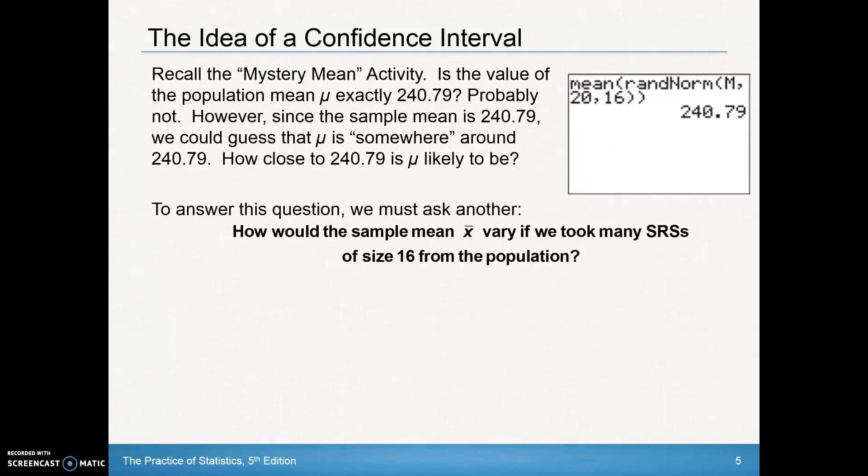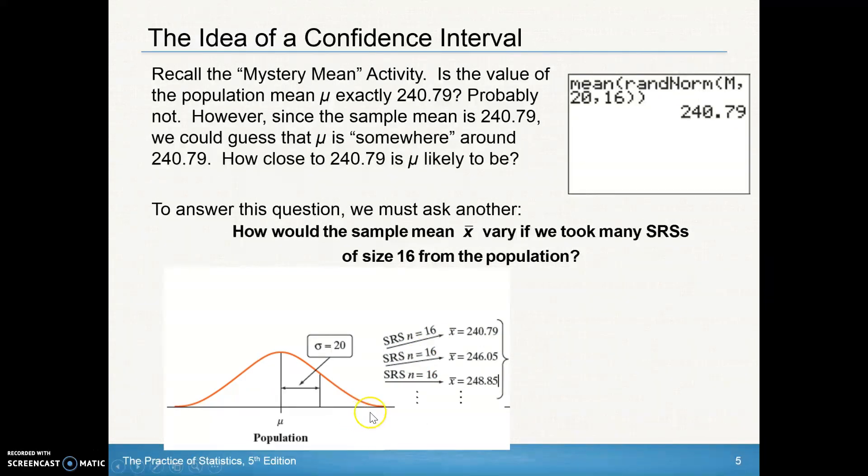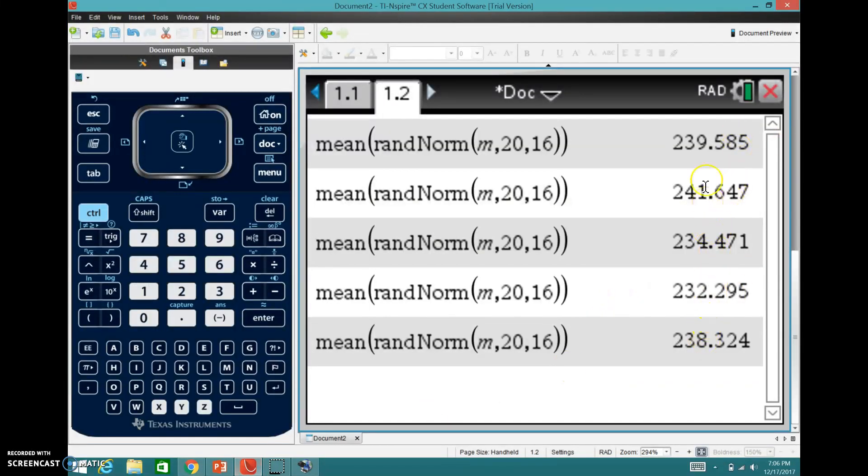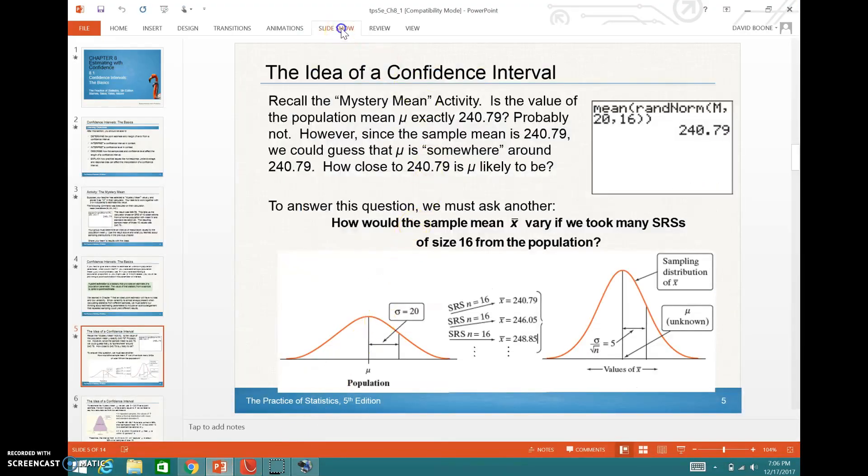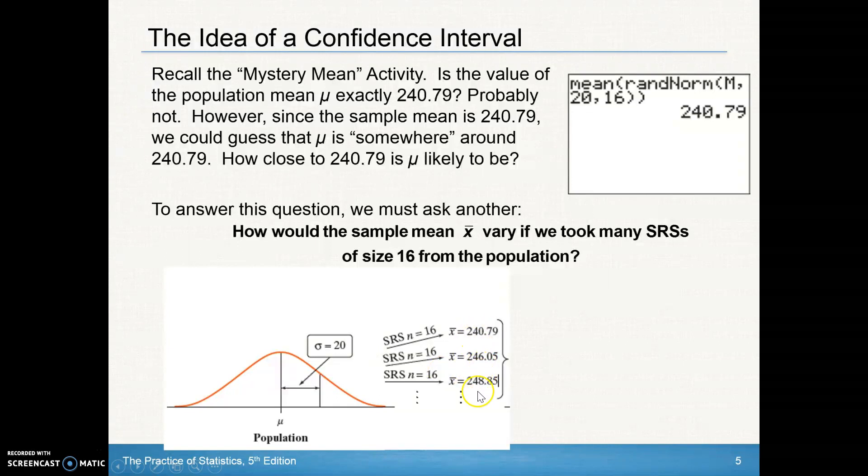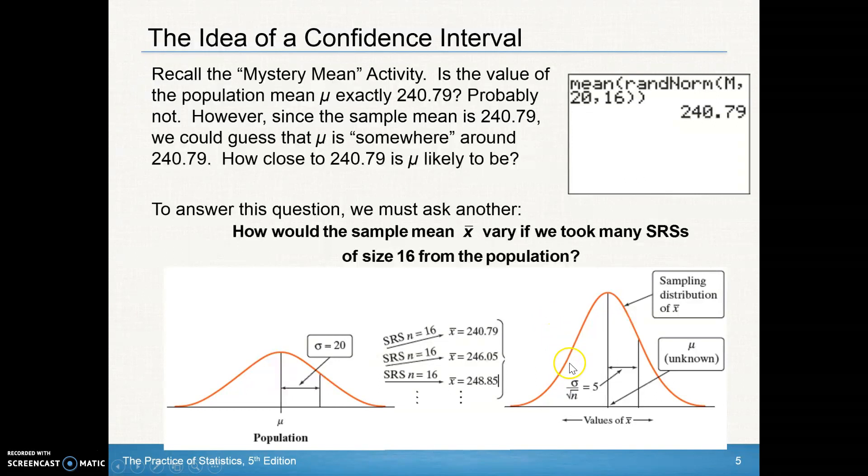You want to really ask yourself this question. How would the sample mean x-bar vary if we took many of these, many of these of size 16 from the population. So here's our population data with a mean unknown and a standard deviation of 20. We take several samples from that like I did with my calculator screen. Here's an example. They have like three here. And on the calculator example I showed, I have one, two, three, four, five going through there. So I'm going to take several samples of size 16, get those individual x-bars from there. And then what we can do is we can create a sampling distribution of these x-bars.